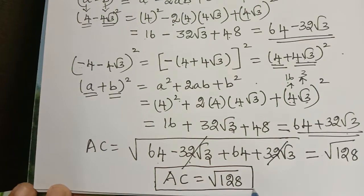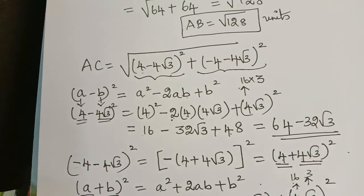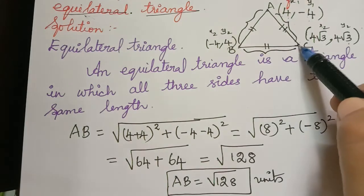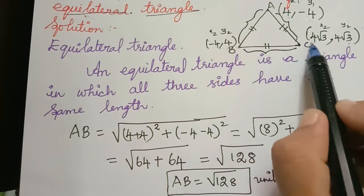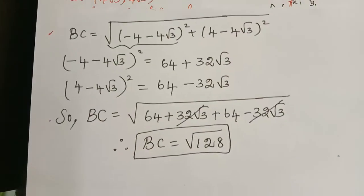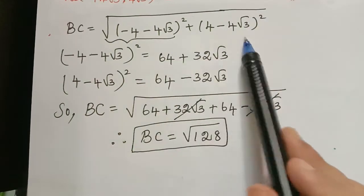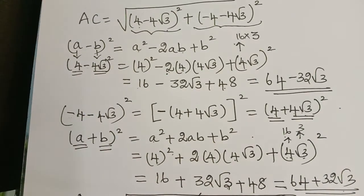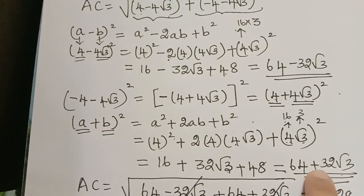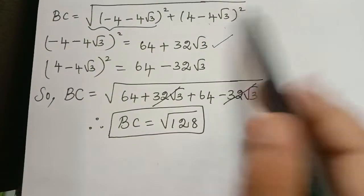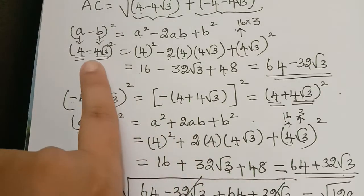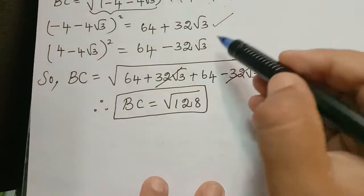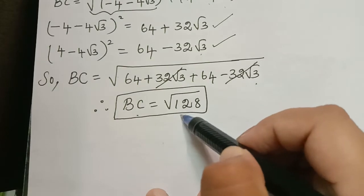Now in a similar manner we find BC. We already evaluated the terms (4 - 4√3)² = 64 - 32√3 and (-4 + 4√3)² = 64 + 32√3 while finding AC. Substituting both, BC = √[(64 + 32√3) + (64 - 32√3)] = √128. So BC is also equal to √128 units.